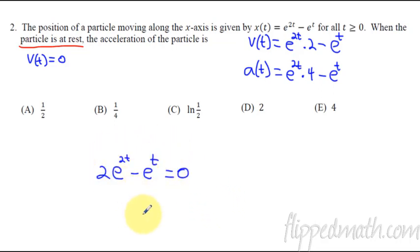2e to the 2t minus e to the t equals zero. Once we can solve this, we then take our answer and plug it in to the acceleration problem. Acceleration equation, I should say. So there's several things with this problem that can trick us up as we're moving. First of all, trying to solve this, most kids might add an e to the t over the other side, but that doesn't really work. What we want is to factor it.